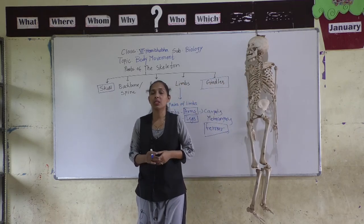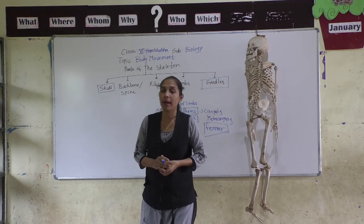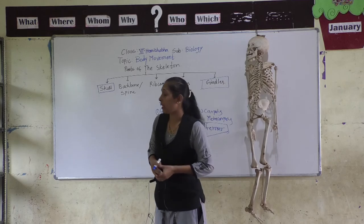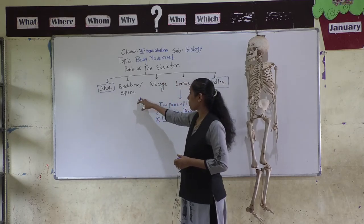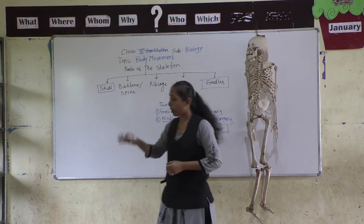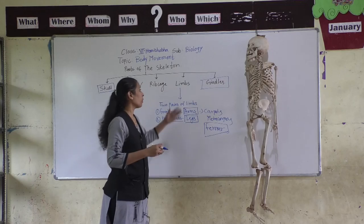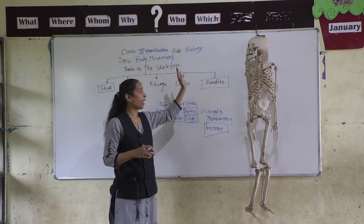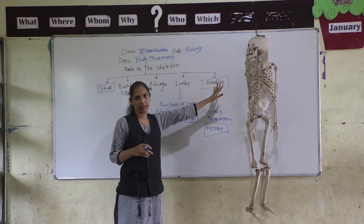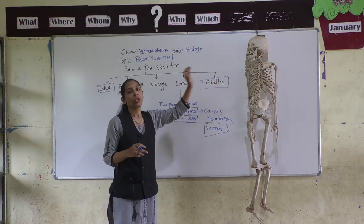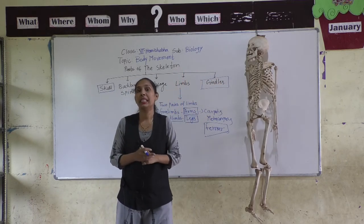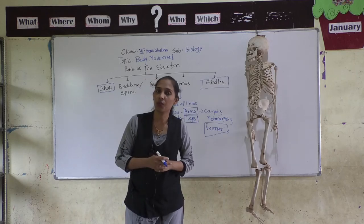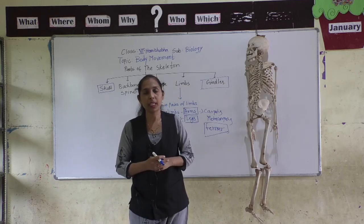We have now discussed all the parts of the skeleton — the skull, backbone or spine, rib cage, limbs, and girdles. Here we will stop. We will meet in the next video with the next topic. Thank you.